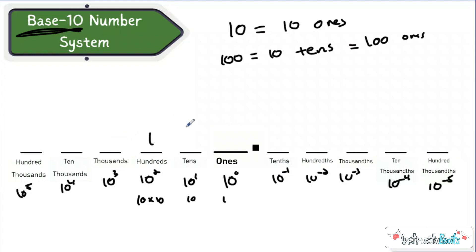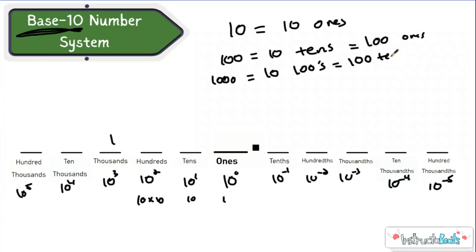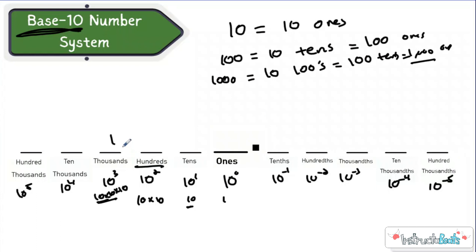So if we had one thousand, one thousand is going to be equal to ten one-hundreds, which is going to be equal to one hundred tens, which is going to be equal to one thousand ones. That's because that's ten times ten times ten. You need one more group of ten to go from one hundred to a thousand, two more groups of ten to go from ten to a thousand, and three more groups of ten — which is equal to one thousand — to go from one to a thousand. Our place value system is all based on ten.